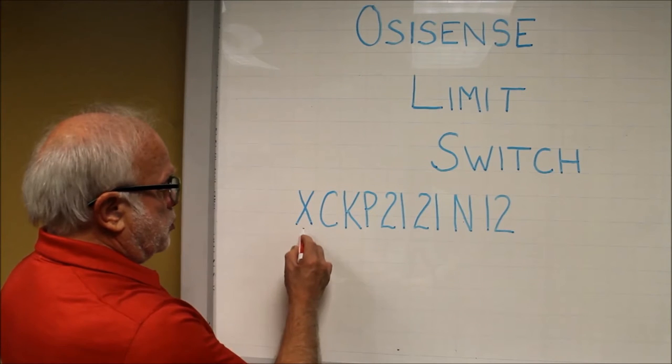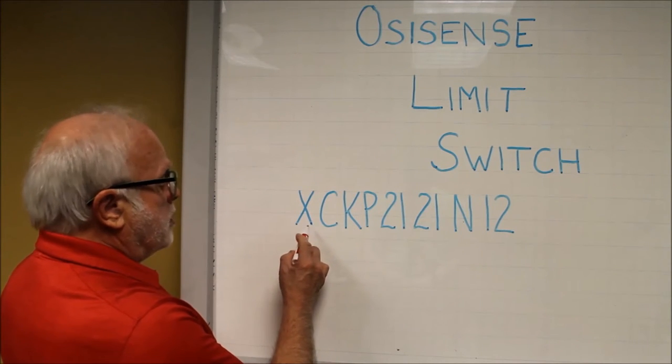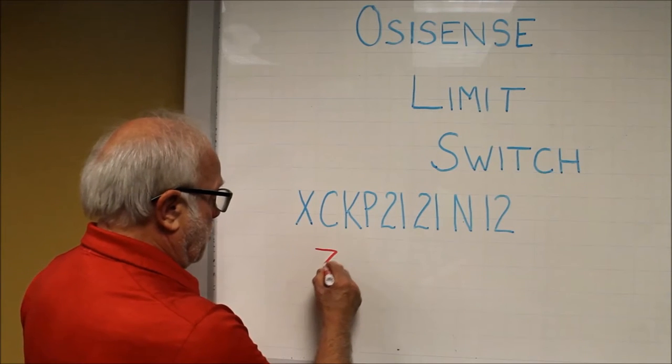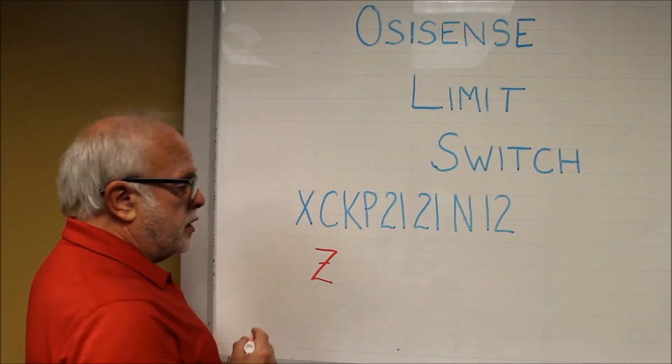A complete limit switch starts with the letter X. This is one way you can tell that you have a complete product and not a component assembly. If you had a component, it would start with the letter Z.